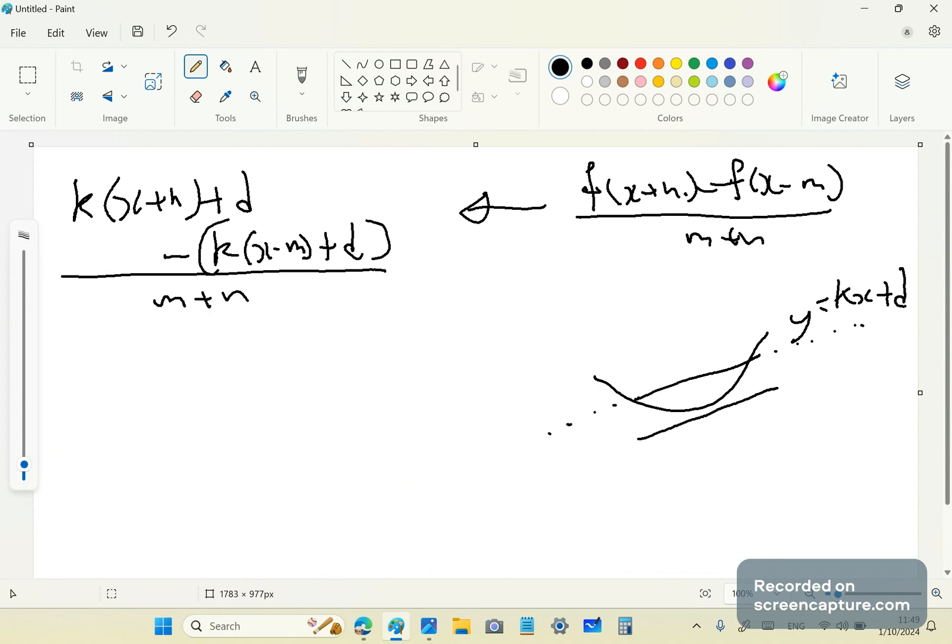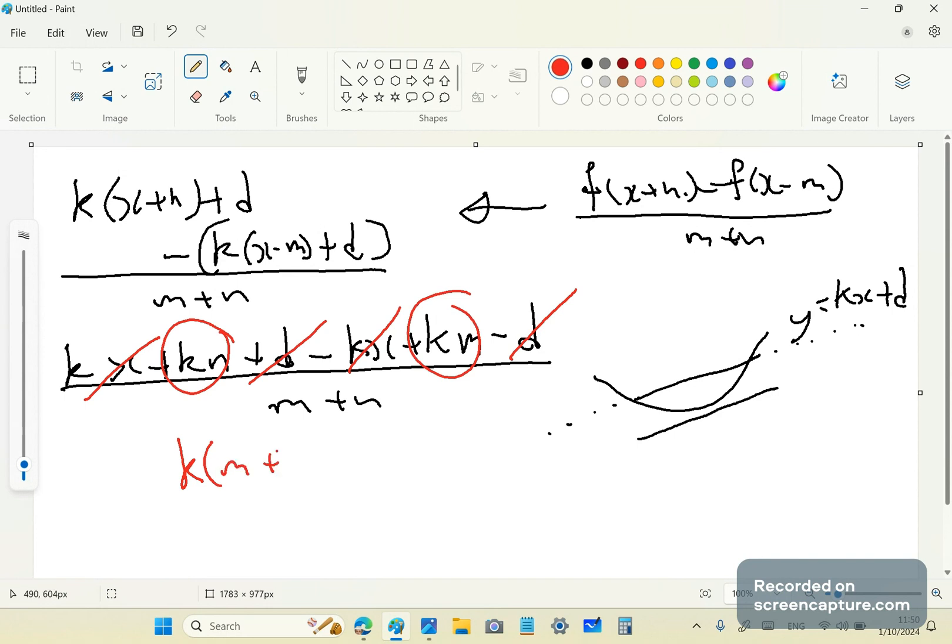It's very easy. So, we'll have kx plus n, plus d minus, on the top, kx minus m plus d all over m plus n. That gives us kx plus kn plus d minus kx plus km minus d all over m plus n. Now, we cancel out terms which don't belong, and we end up with k, this term and this term. So, it's km plus n over m plus n, and guess what? The distances n and m that you saw here have no effect on the slope.